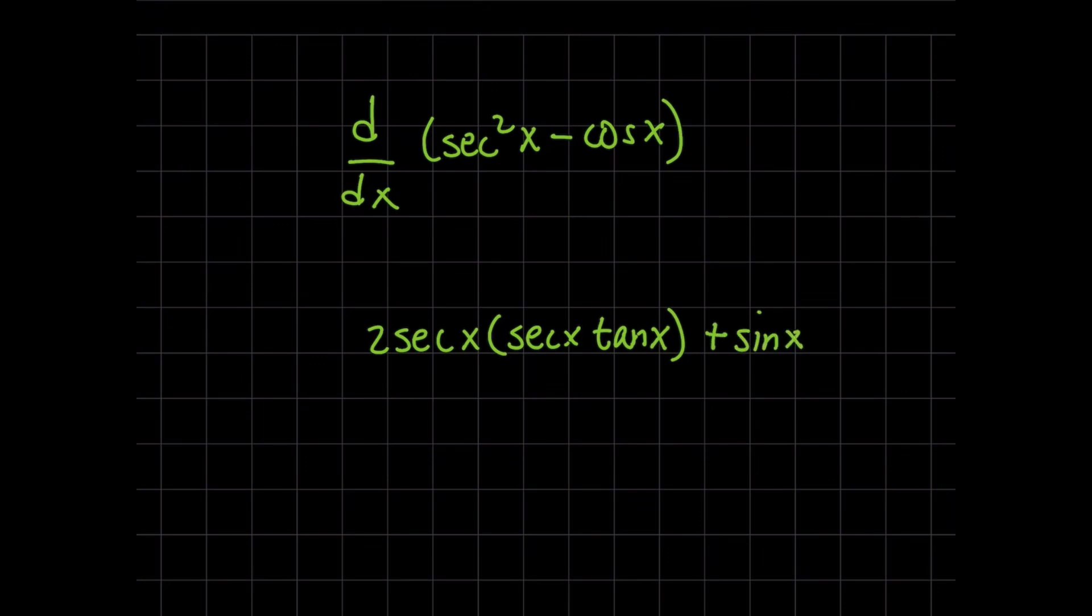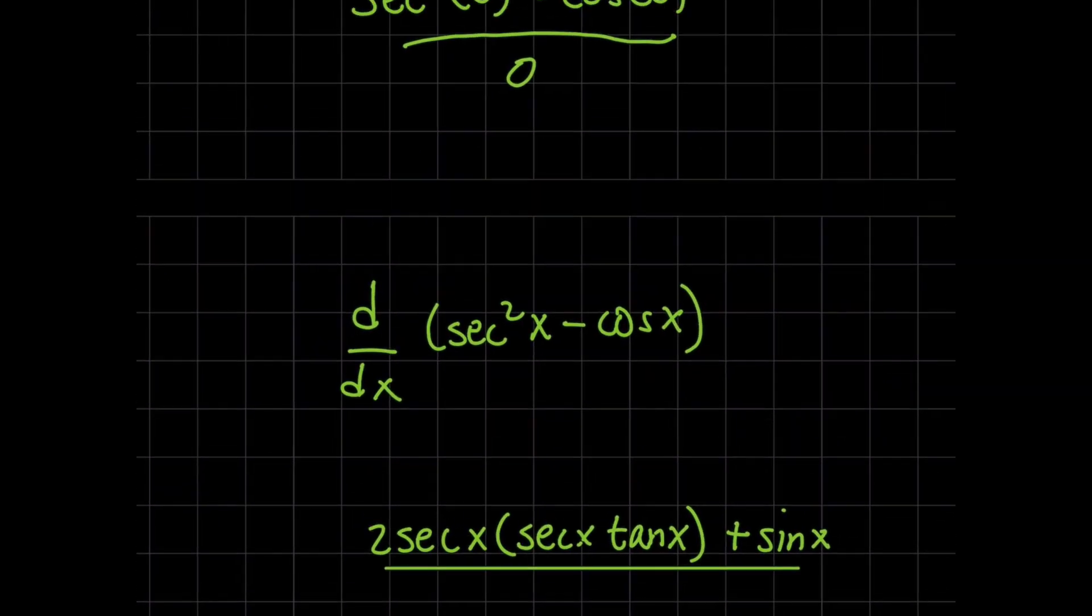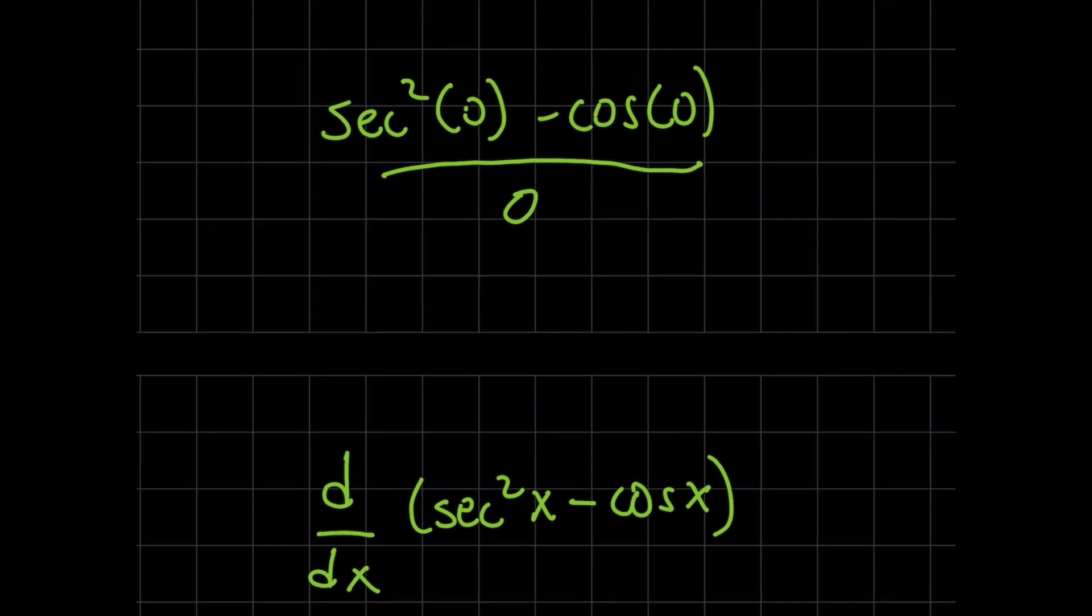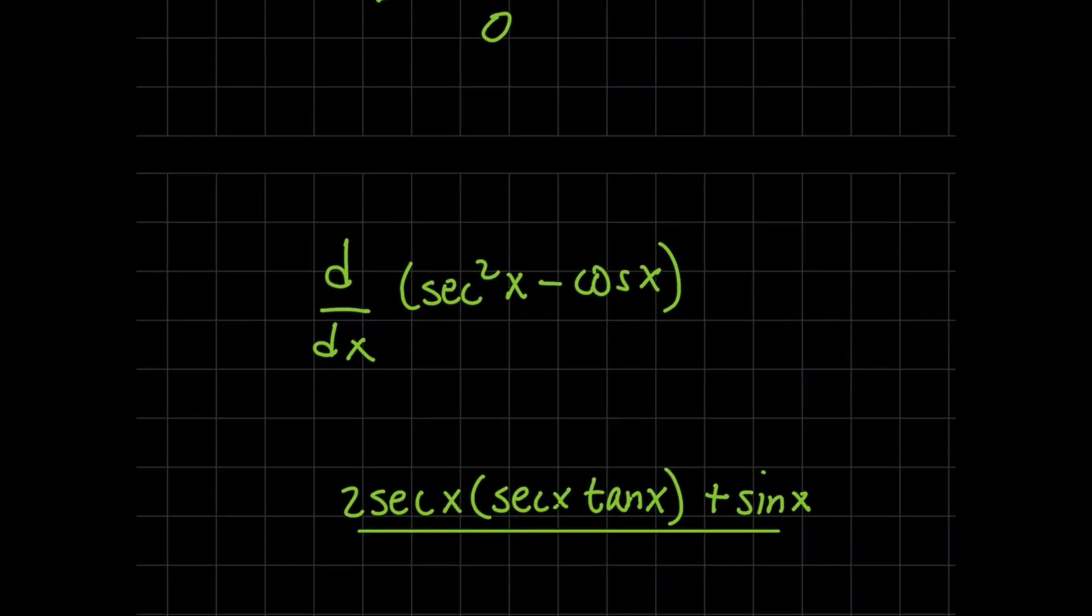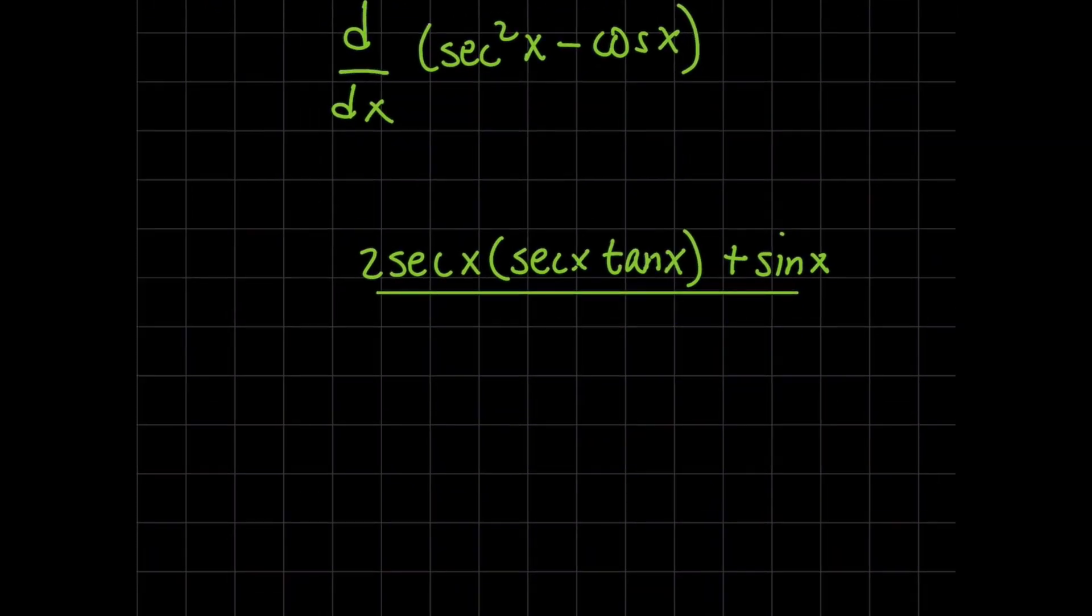Now the new denominator is going to be what we had before, which is after the first application of L'Hopital's rule we had 3x squared, so this is going to be 6x. And for this limit you want to know, if I apply L'Hopital's rule again, am I breaking any rules?